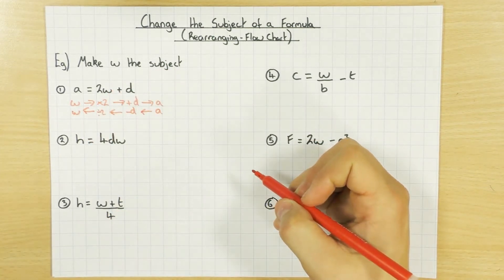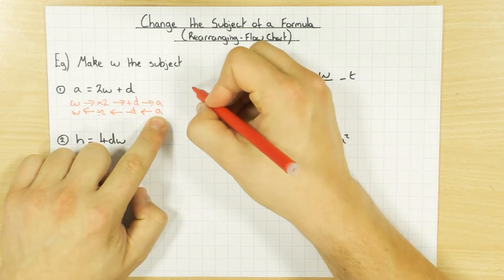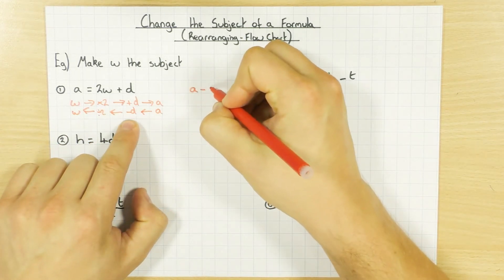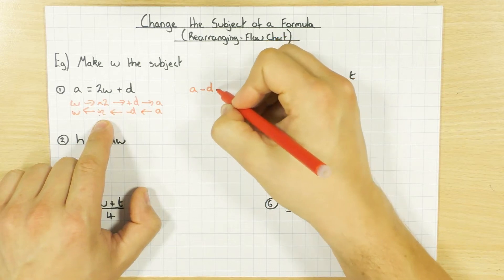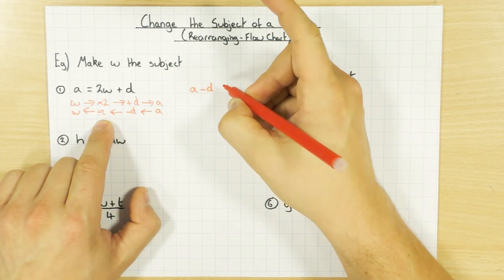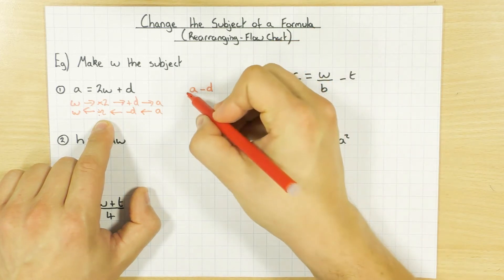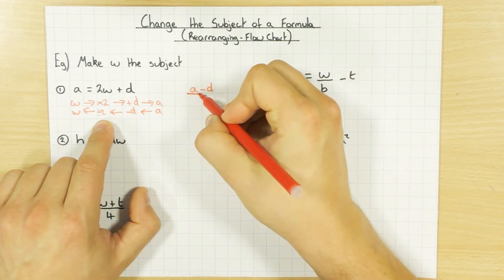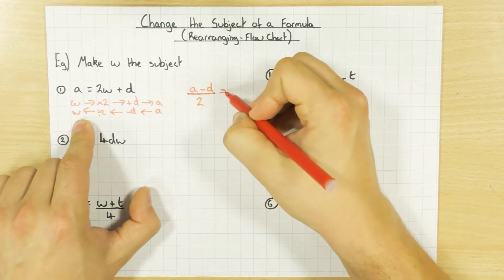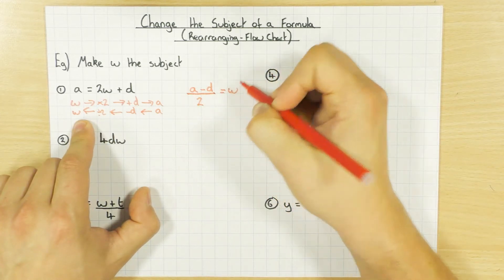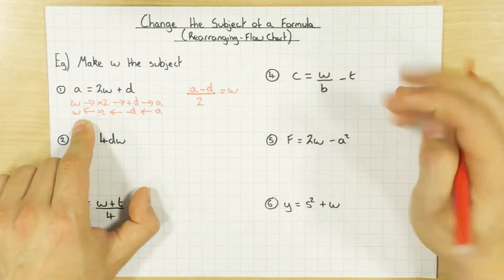Then all I do is write that out. So I've got A, I take away D and I divide by two. Now some people put a little divide by two just under D — don't do that because then you're just dividing D by two and that's not correct. All you need to do is divide everything by two, and then that equals W. So you've now made W the subject because W equals this.